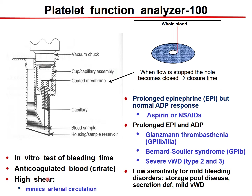This measurement mimics high shear conditions that simulate arterial circulation. A prolonged closure time with the epinephrine disk but normal ADP closure time suggests aspirin or NSAID use. Prolonged both epinephrine and ADP closure times could indicate Glanzmann thrombasthenia, Bernard-Soulier syndrome, or severe von Willebrand disease (type 2 and type 3). The PFA-100 has low sensitivity for mild bleeding disorders, storage pool diseases, secretion deficiency, or mild von Willebrand disease.